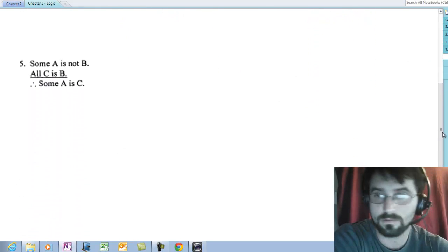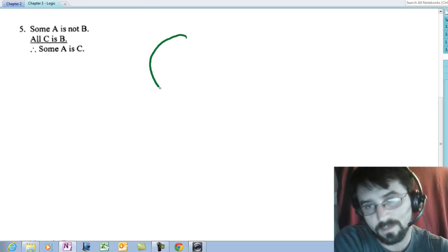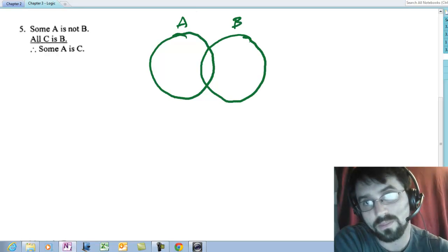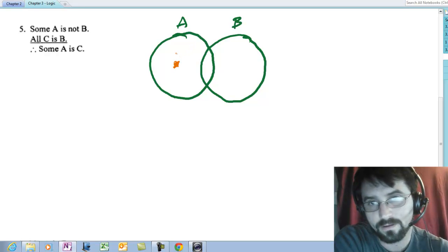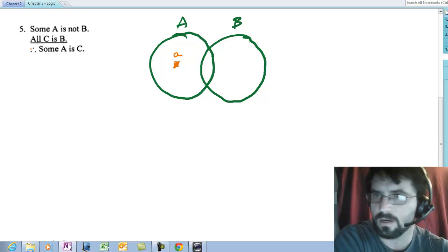Moving on. Some A is not B. So if I'm going to draw an A that is not a B, I'm going to put that thing out here. And I'm going to say there's something out here. I'll call it little a. All C is B.